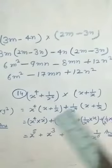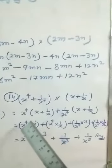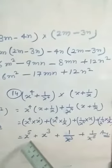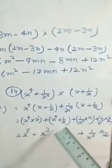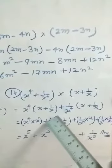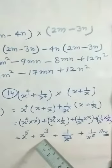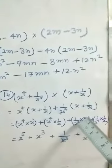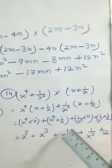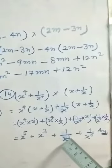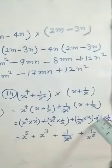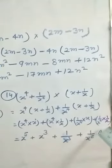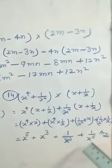So now x to the power 5, because the powers add to give 5. Then x to the power 4 divided by x, so the x cancels leaving x to the power 3. Next, x divided by x to the power 4 cancels to give 1 over x to the power 3. Finally, 1 over x to the power 4 times 1 over x gives 1 over x to the power 5.